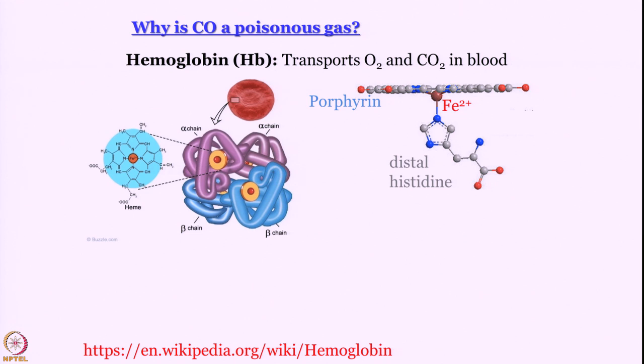One axial position is usually taken up by a solvent molecule. The other one is taken up by this distal histidine amino acid moiety from the protein chain. And the way it transports oxygen and carbon dioxide is that oxygen and carbon dioxide bind in the other axial position by driving out the solvent molecule. Problem with carbon monoxide is that when carbon monoxide comes and binds like this, it does not want to leave.